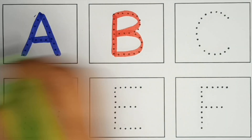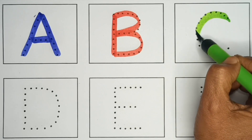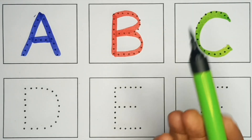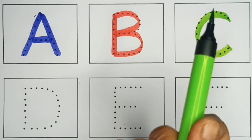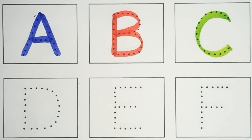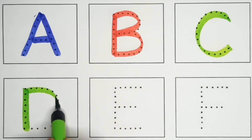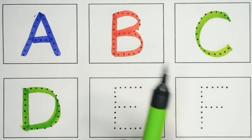C, C for cat, parrot green colour. D, D for dog, parrot green colour.